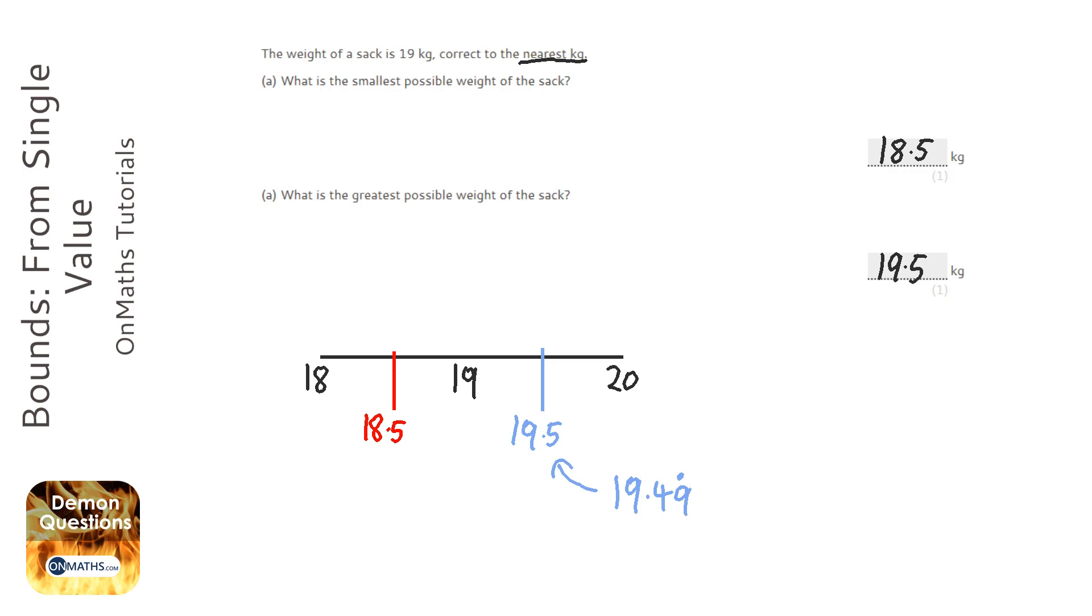Now this works because it's a continuous scale. If you were doing amount of counters, say if it was 19 counters or 190 counters to the nearest 10, then the lowest one would be 185, that would be fine, but the highest it could have been before it was rounded to the nearest 10 would be 194.